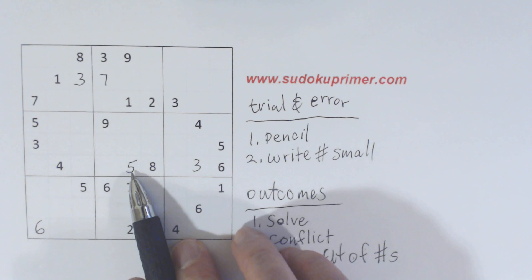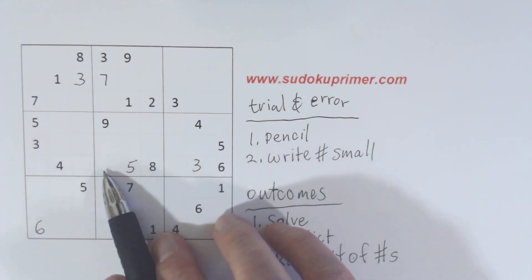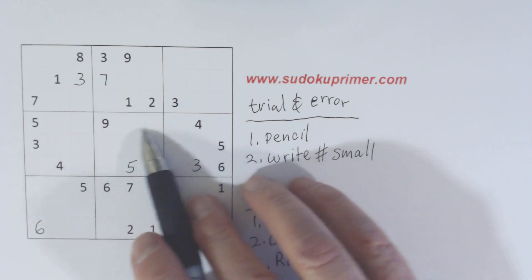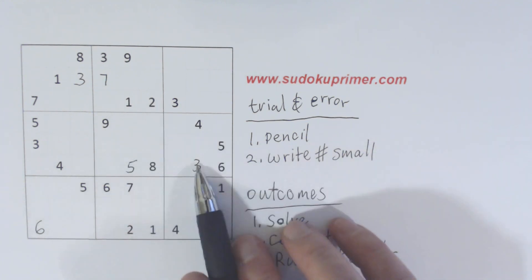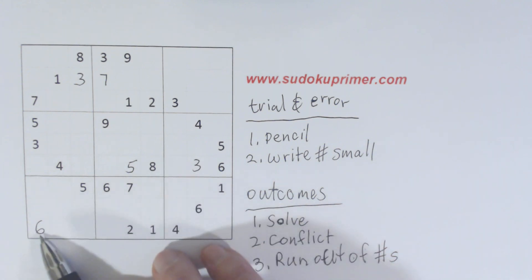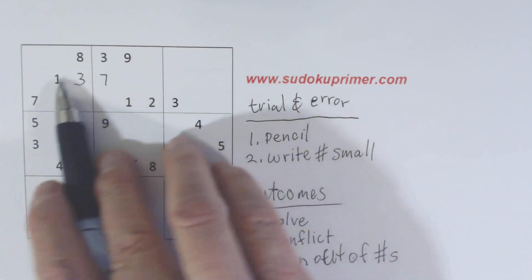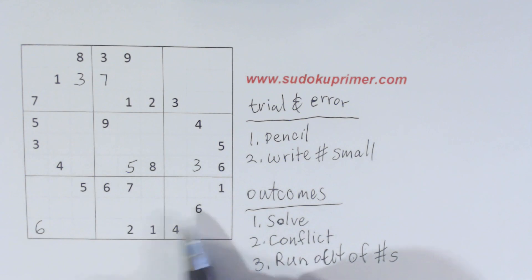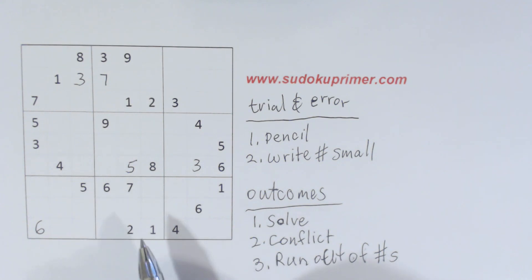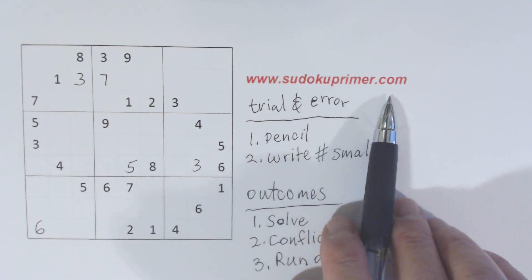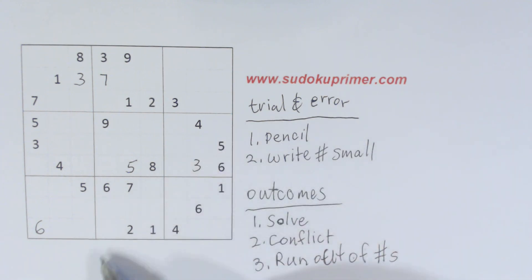We have a five here, so it can't go there — one of these is a three, and then the three goes here. The six is a little bit tricky. We use double row elimination in this section and double column elimination in this section to find that six. If you're not familiar with those techniques, go to sudokuprimer.com and look for a video on double row or double column elimination.